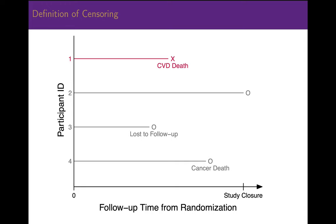Finally, participant 4 died of an unrelated cause — let's suppose of cancer. This person is no longer at risk for CVD death and can no longer be followed. The cancer death is called a competing event; death due to a non-CVD cause happened to occur before death from a CVD cause. This person is censored due to a competing event on the date of death, marked here with an O. Careful investigation must be done to be sure the intervention did not cause this adverse effect, and the Independent Data and Safety Monitoring Board should review the case.